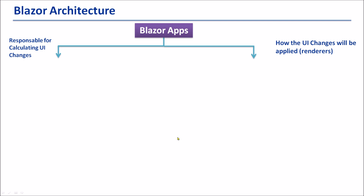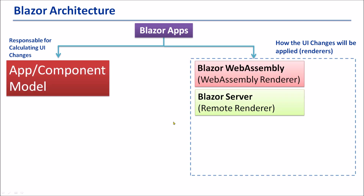Essentially, Blazor has a separation between how it calculates UI changes — namely the app component model — and how these changes are applied — namely the renderer. In other words, the app component model is responsible for calculating UI changes and the renderer is responsible for how these changes will be applied.